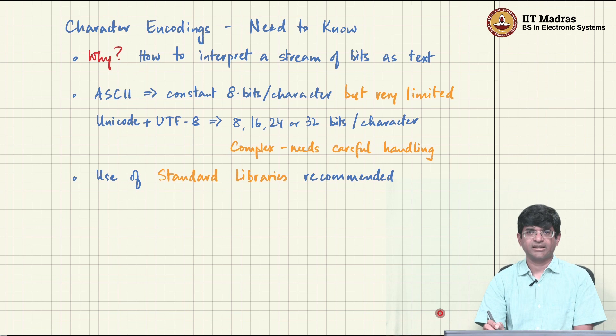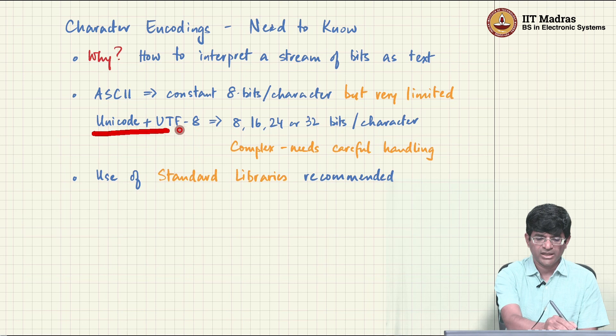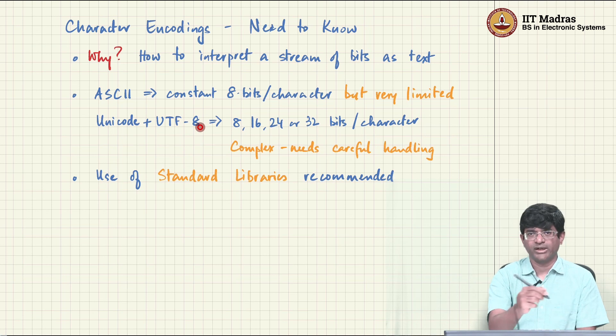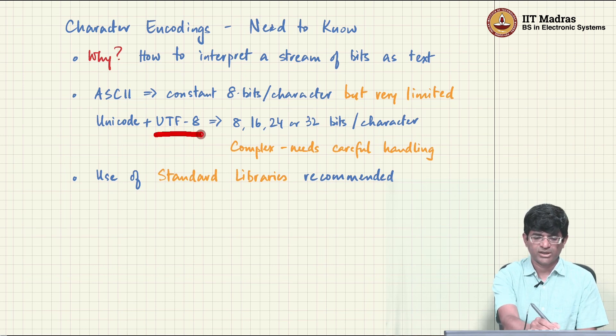But nowadays a character is something else. It could potentially be one 8 bit character or it could be something even more than that. In particular when we start using Unicode, we need an encoding which basically takes those code points defined by Unicode and converts them into a set of bits. And the most common and popular one among those encodings nowadays is what is called UTF-8.